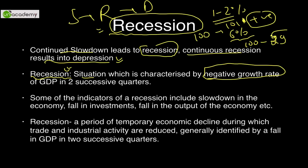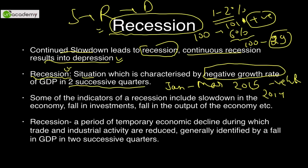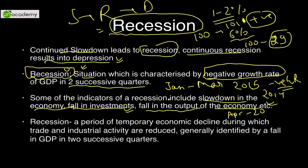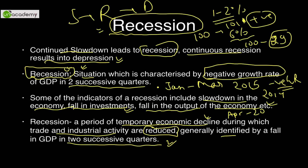Recession is formally defined when negative growth rates are observed in two successive quarters. For example, if January–March 2015 shows negative growth compared to the same quarter in 2014, and April–June 2015 also shows negative growth versus 2014, the economy is in recession. Indicators include: investment falls, FDI withdraws, output falls. In simpler terms, recession is a period of temporary economic decline where trade and industrial activity are reduced, generally identified by a fall in GDP in two successive quarters.